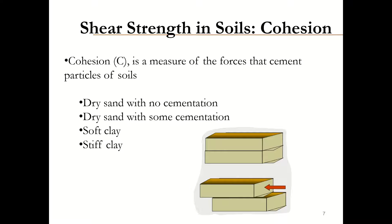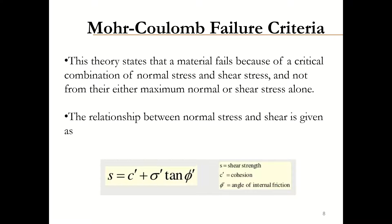For other cases — that is, C-phi soil — there will be some cohesion value and some angle of internal friction. The Mohr-Coulomb failure criteria states that a material fails because of a critical combination of normal stress and shear stress, and not from the maximum normal or shear stress alone. The relationship between normal stress and shear stress is given as S = C + σ·tan(φ), where S is the shear strength, σ is the normal stress, C is cohesion, and φ is the angle of internal friction.